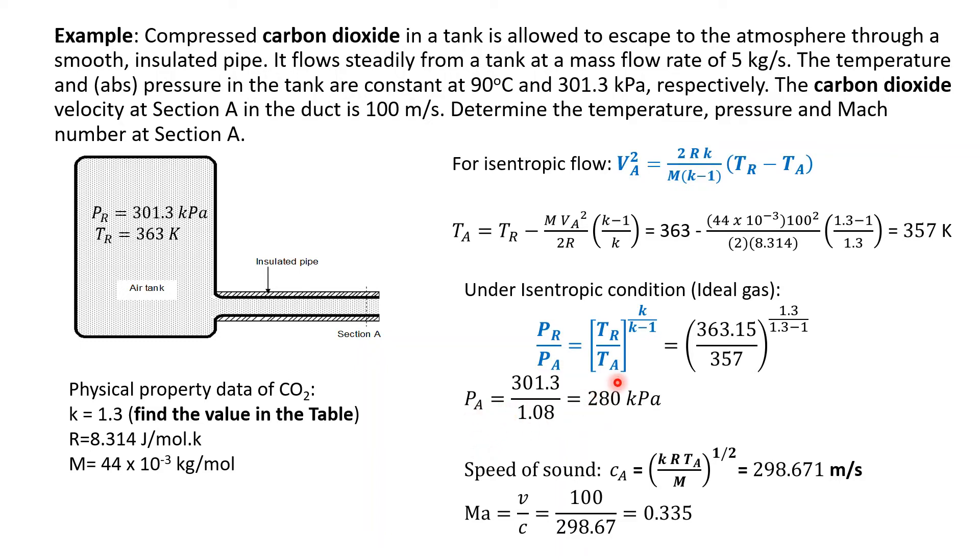And next, to find the Mach number, we need to know what will be the speed of sound at point A. We use the speed of sound equation. Then, we can easily calculate the Mach number. So, the answer is Mach number equal to 0.335. So, before we continue...